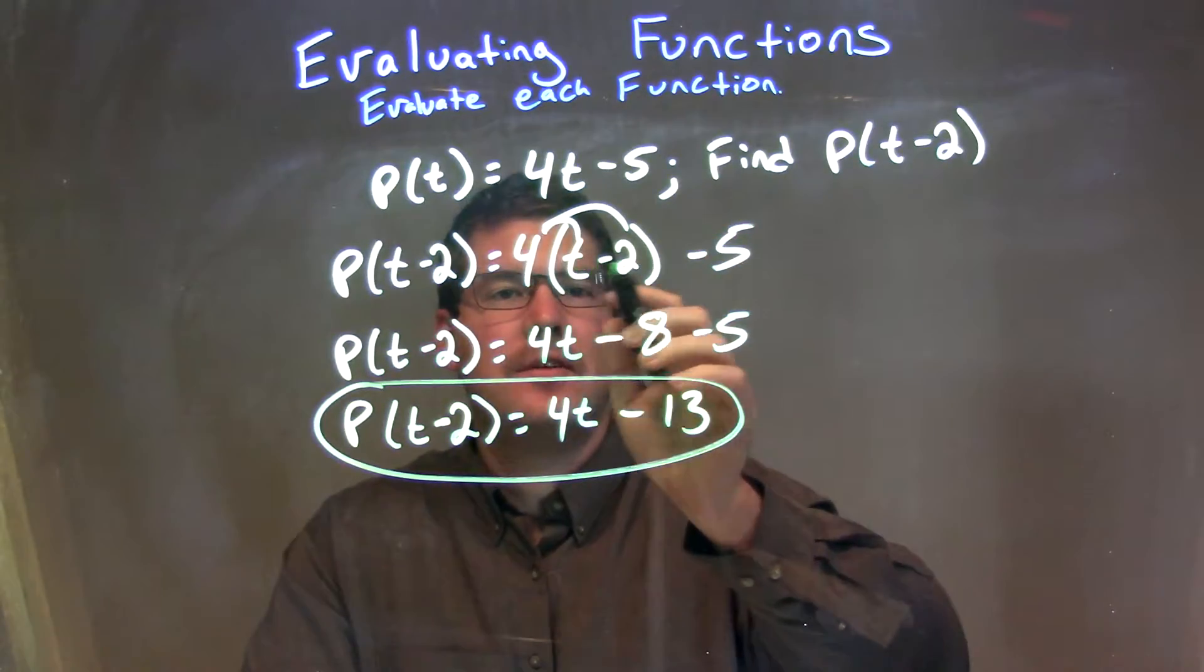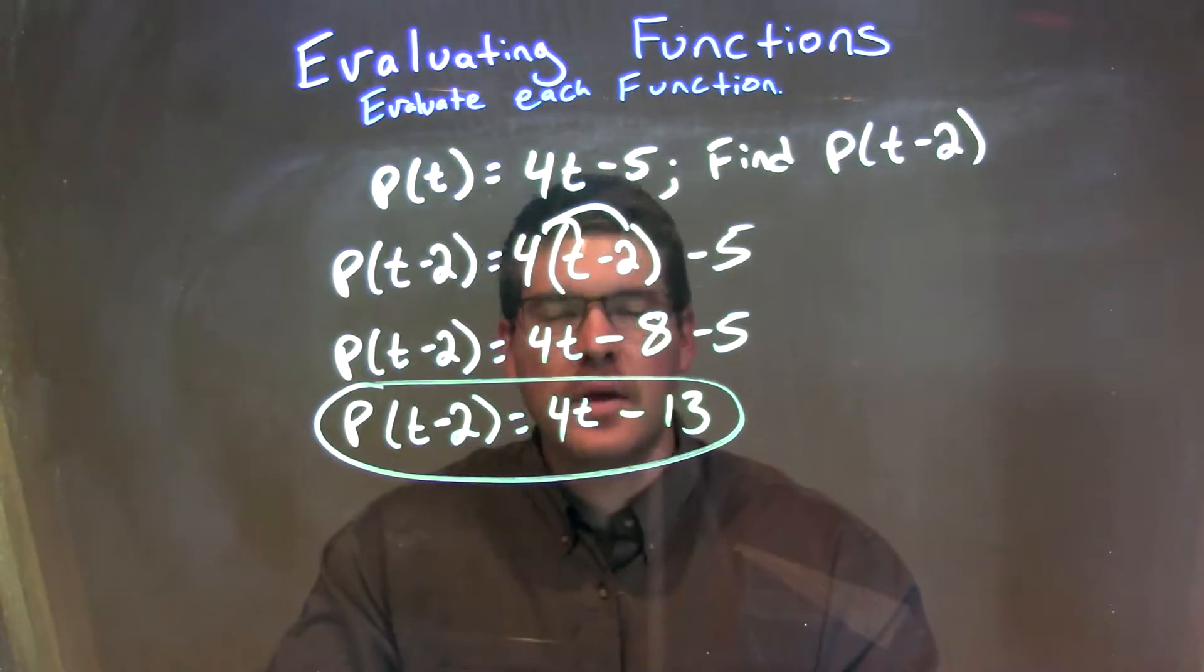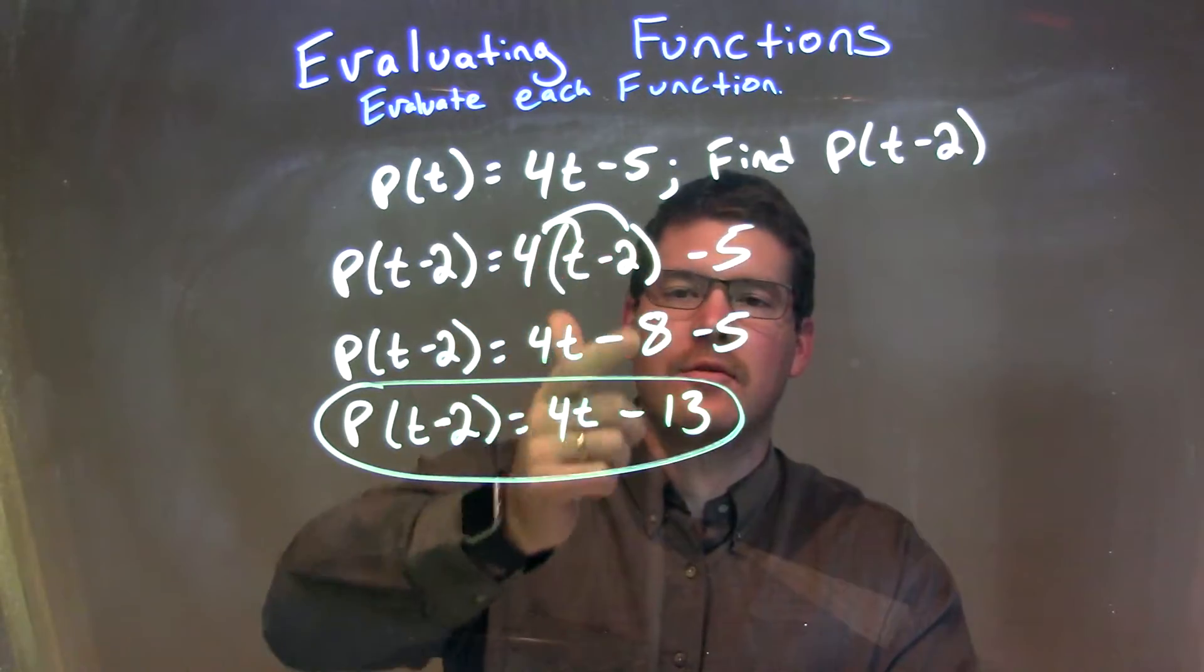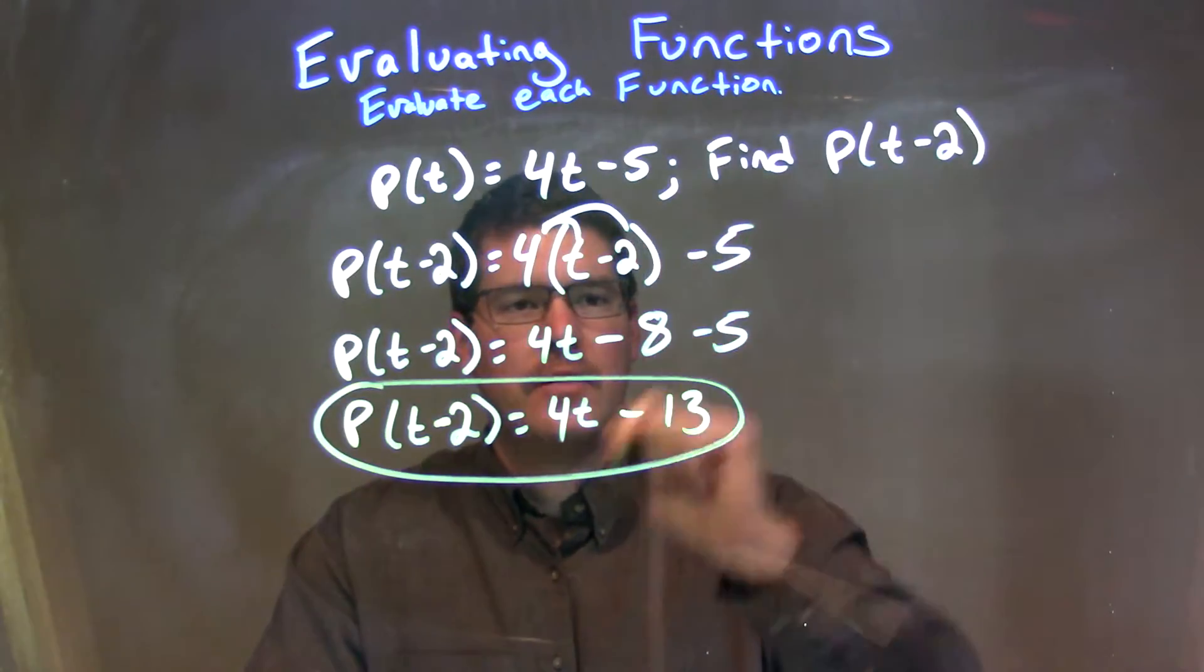So we have 4 times t minus 2 minus 5. Distribute the 4 across. 4 times t is 4t, and 4 times minus 2 is minus 8. We bring down the minus 5.